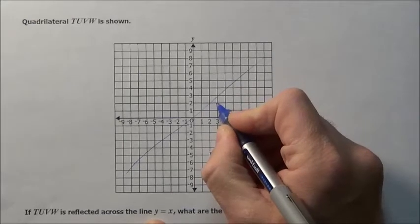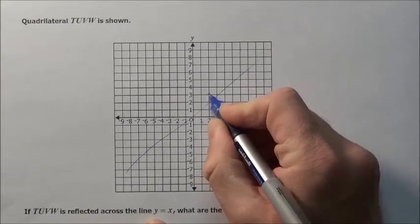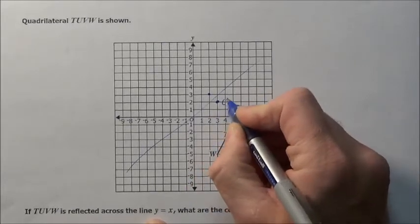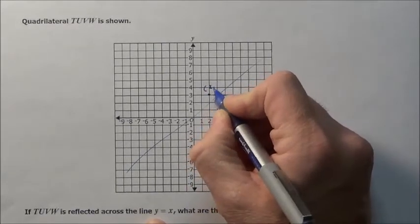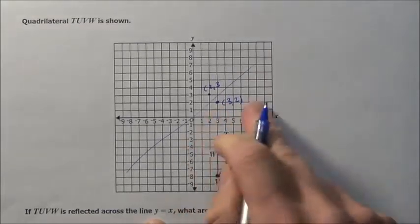If you think of a point like right here at over 3 up 2, you can see it's going to hit right here at 2, 3. So 3, 2 gets reflected and goes to the point 2, 3. Well notice what happens. The X and Y values just reverse. They just flip.